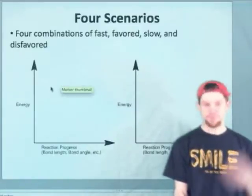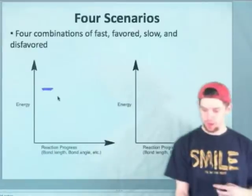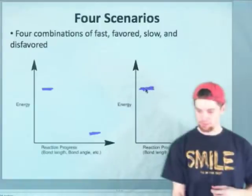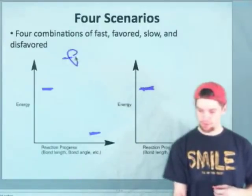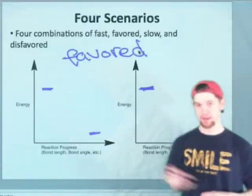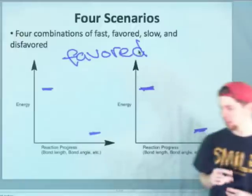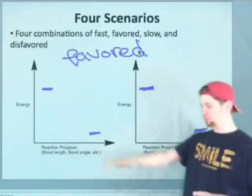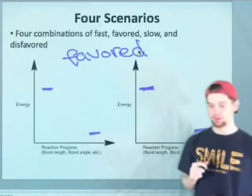For the favored situation, we're going to start out by putting the reactants and products in the same positions thermodynamically. So here we're in the favored manifold thermodynamically. In the next slide, we'll look at the unfavored situation. But in the favored situation, the products are lower in energy than the starting materials.